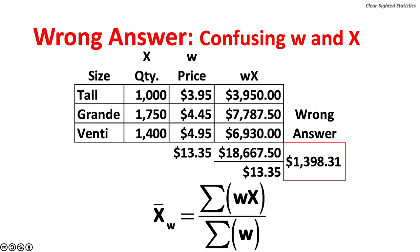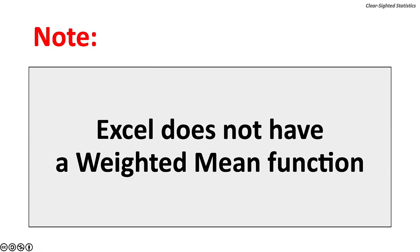Suppose you confused weights and the random variables. If price were the weights, sigma w would be $13.35 and the weighted mean would be $1,398.31. Clearly, this is a mistaken answer — it is impossible for the average Frappuccino to cost $1,398.31 when the three sizes cost between $3.95 and $4.95. Please note: Excel does not have a weighted mean function.